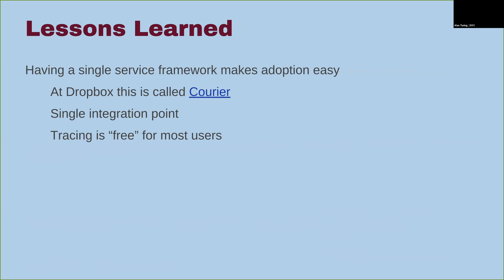Lessons learned: first, having a single service framework — a single integration point — made adoption of tracing at Dropbox super easy. Everyone uses Courier; there's no other option. So they get tracing for free. You build a service at Dropbox, you can look in Jaeger, and your traces will show up.